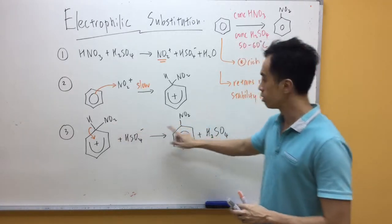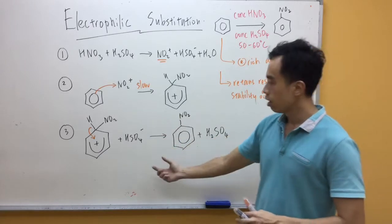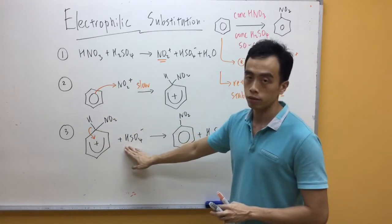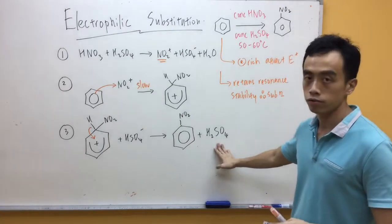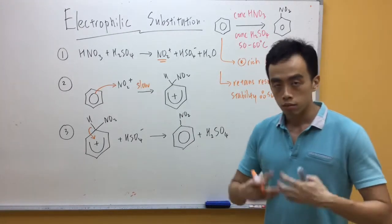And then my nitro group is the group that is now attached to my benzene. So you'll get a product, nitrobenzene. And then your H+ released, combined with HSO4-. My H2SO4 is a catalyst. So at the end of the mechanism, it must be regenerated.